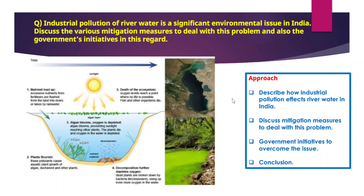Industrial pollution of river water is a significant problem. There are a number of reasons for pollution of rivers, particularly because of industries. If you look at the river banks of several important rivers across different parts of India — whether it is Ganga, Mahanadi, Godavari, Krishna, or Kaveri — a lot of industries are located across these river banks, and very often these industries release industrial effluents into the rivers without treating or recycling the wastewater. This industrial water is a source of pollutants, nutrients, and many other chemicals.